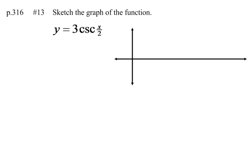Now, before I start this, the graph cosecant, we know cosecant is 1 over sine, so I'm going to try to graph this function here, y equals 3 times the sine of x over 2.